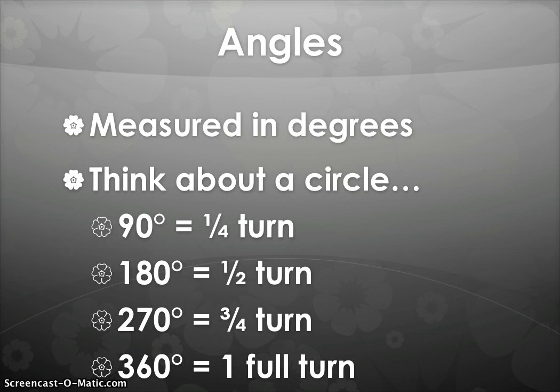And then if you add another quarter turn onto that, another 90 degrees, you get 270 degrees and three quarters of a turn. And the whole entire thing is four pieces of 90 degrees, or four quarter turns, which is one full turn.